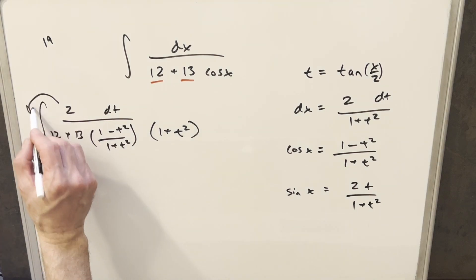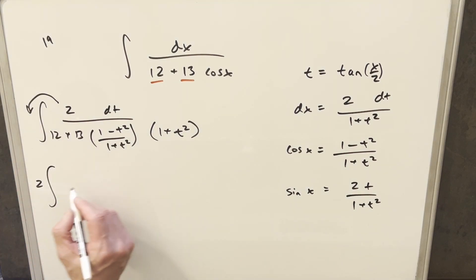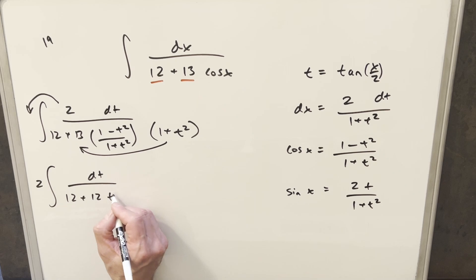I'll take this 2, and I'll bring it up front of the integral, and we'll rewrite this. So we'll have 2 dt. Then we'll distribute it in this 1 plus t squared. So first, 12 times this is going to give me 12 plus 12t squared.